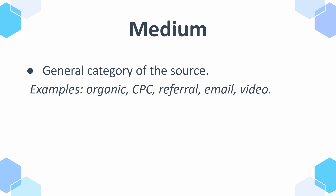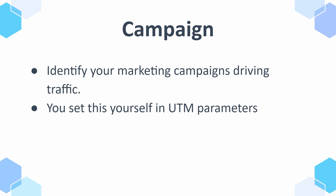Then we have campaign, which is used to identify your marketing campaigns. When you're driving traffic to your website, you set these yourself in the UTM parameters — that's why it's important to understand how UTM parameters work so you can track your campaigns. Campaigns also have things like UTM term and UTM content, but you can learn more about that from my video about UTMs.